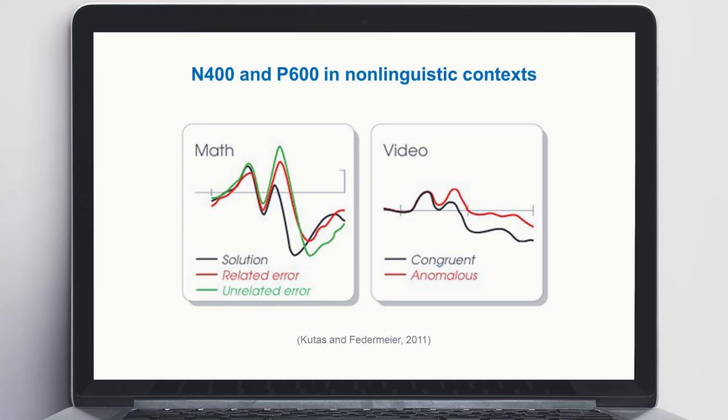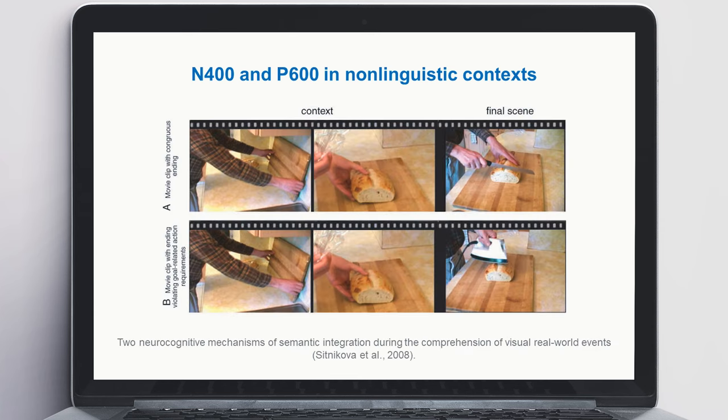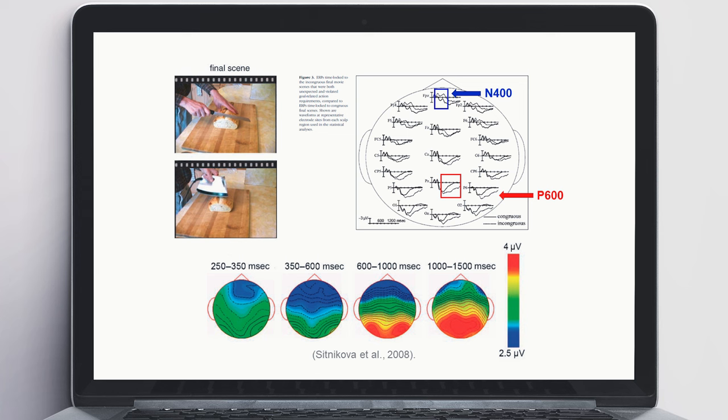It should be highlighted that potentials like N400 and P600 can arise in response to any meaningful but non-linguistic stimulus, such as drawings, photographs, or math problems. These potentials display the same patterns connected to the context, structure, and construction rules of the provided content. However, their topography may differ from what we see while analyzing speech information. The verbal and non-verbal components of N400 and P600 are likely related to general conceptual knowledge maintained in long-term memory — specifically, how various objects, activities, and events in our environment are connected.